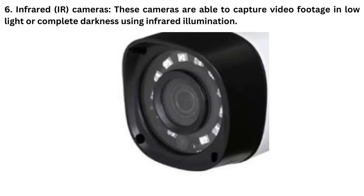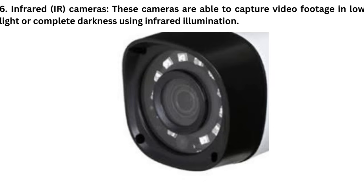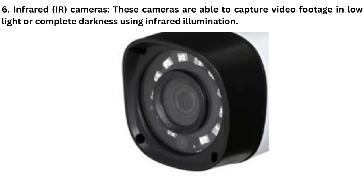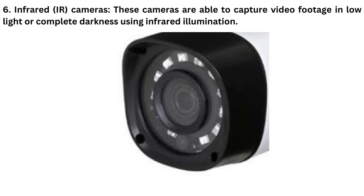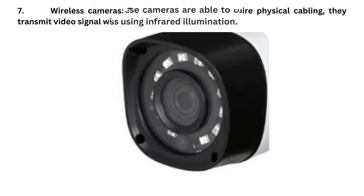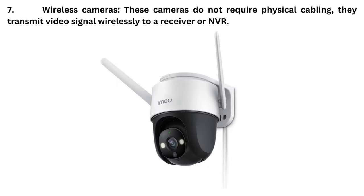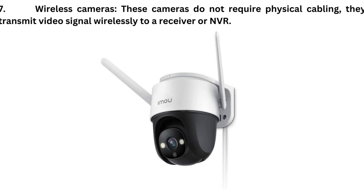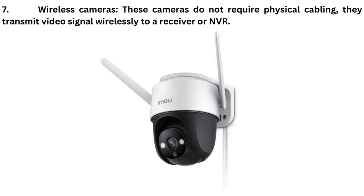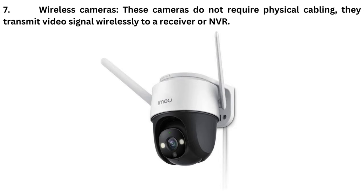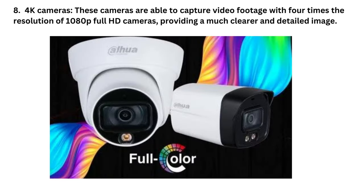6. Infrared cameras — these cameras are able to capture video footage in low light or complete darkness using infrared illumination. 7. Wireless cameras — these cameras do not require physical cabling; they transmit video signal wirelessly to a receiver or NVR.